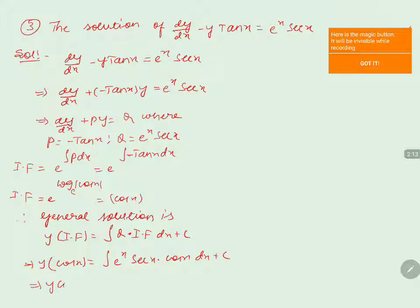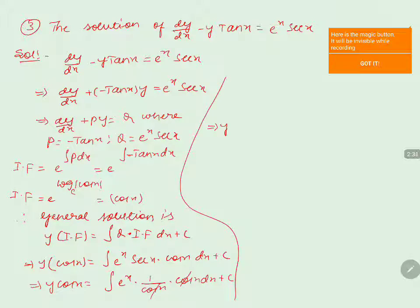Here, y·cos(x) equals ∫eˣ·sec(x)·cos(x) dx + c. Since sec(x) can be written as 1/cos(x), multiplying by cos(x) gives 1, so this simplifies to y·cos(x) equals ∫eˣ dx + c.